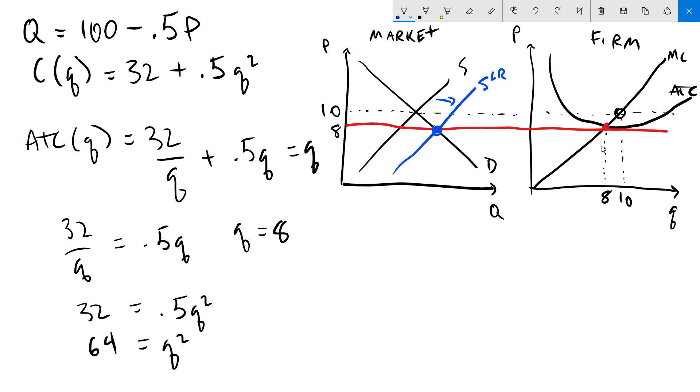Now that I know the market price, I can solve for our market quantity. Our long run price is 8, so I'm going to plug that into my demand function. So my long run quantity is 100 minus 0.5 times 8, which is 96.